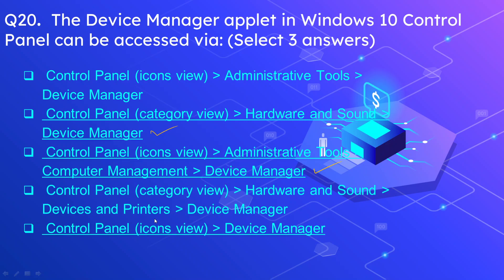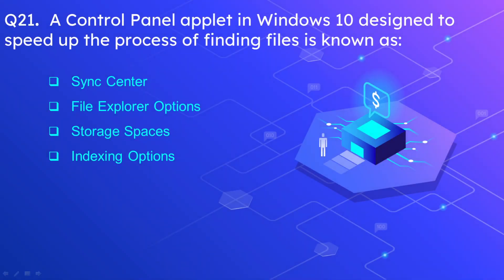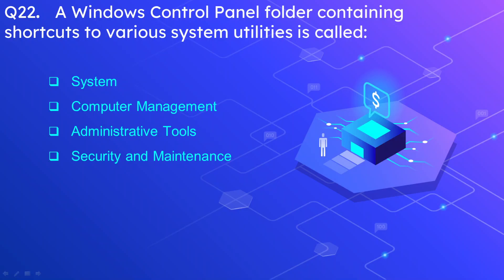Question number 21: The control panel applet in Windows 10 designed to speed up the process of finding files is known as? The options are Sync Center, File Explorer Options, Storage Spaces, and Indexing Options. The correct answer is Indexing Options.